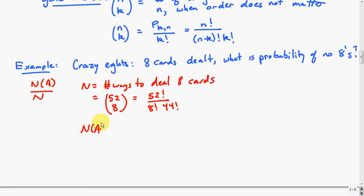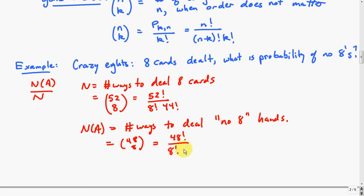The number of ways to deal no 8 hands, n(A), is similar to before, but now we're looking at a deck with 48 cards with the four 8's removed. Instead of 52 choose 8, we'd have 48 choose 8. From the 48 cards that are not 8's, these are the ways we could choose a no 8 hand. That's 48 factorial over 8 factorial times 40 factorial.